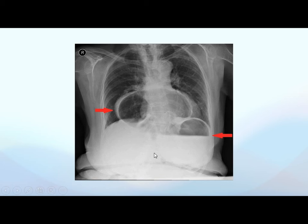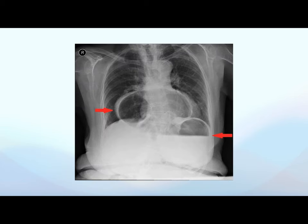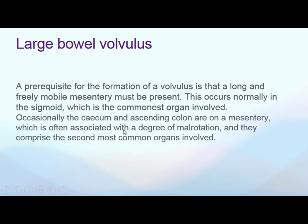An image showing two air-fluid levels represents mesentroaxial gastric volvulus. The organoaxial type shows the stomach flipped to the other side — with barium meal given, we see the stomach inside a hernia and upside down. Based on plain X-ray alone, we cannot definitively differentiate between the types, but the pattern of air-fluid levels helps guide diagnosis.